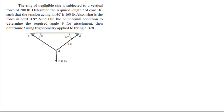The ring of negligible size is subjected to a vertical force of 200 pounds. Determine the required length of cord AC such that the tension in AC is 160 pounds. Also, what is the force of cord AB, and find theta. The sum of forces in the X direction is equal to zero.